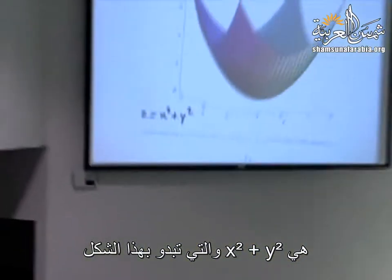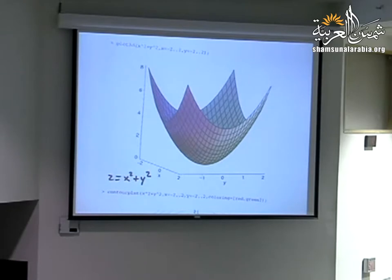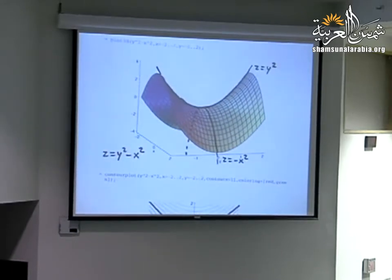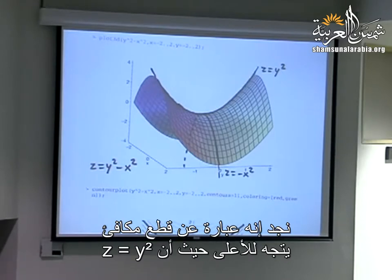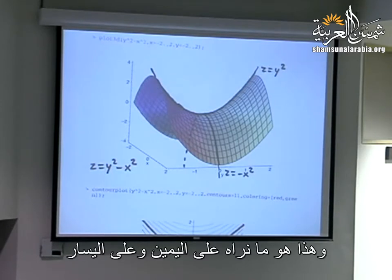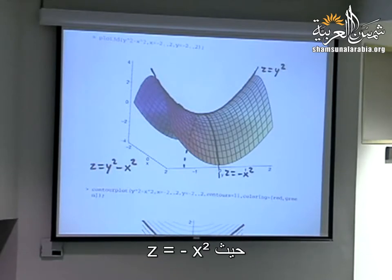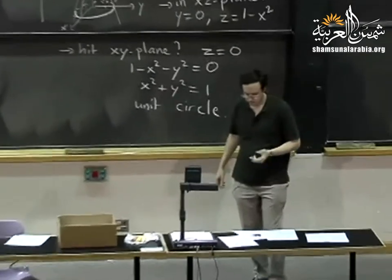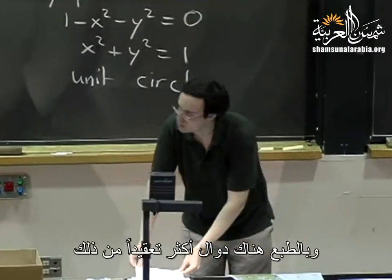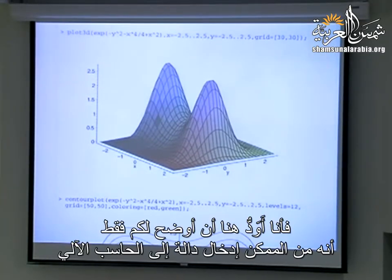What I plotted on my computer was actually x squared plus y squared — that looks like a paraboloid going upward. Here's another example: the graph of y squared minus x squared. That one is kind of interesting — it looks like a saddle. In the yz plane it's a parabola going up, z equals y squared; in the xz plane it's a parabola going downward, z equals minus x squared. So we have a parabola going downward in one direction and upward in the other, forming this surface. You can put any formula into a computer and it will show you a picture.